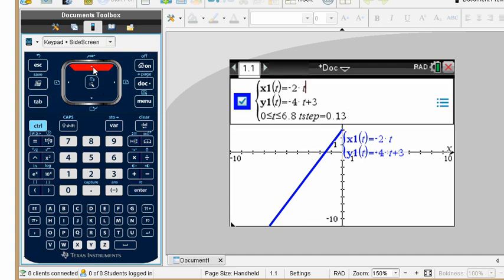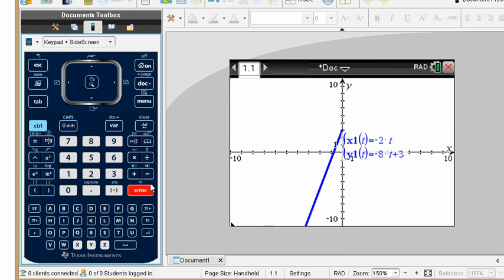Tab. And we'll go negative 2t and y is negative 8t plus 3. So I'm going to change this 4 to 8. Everything else should be the same. So we have, again, the y-intercept of positive 3 and not negative 3. So that one is not going to be working for us either.